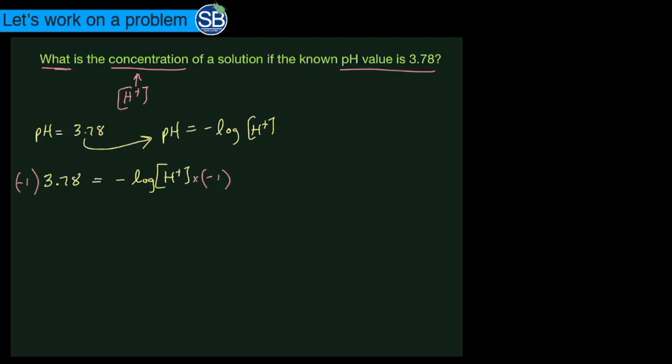When you multiply in, what's going to wind up happening is this negative one is going to come in and attack that negative value. When we do that, we're going to wind up getting positive log of the hydrogen ion concentration, and this is going to be equal to the negative of the left side, which is negative 3.78.